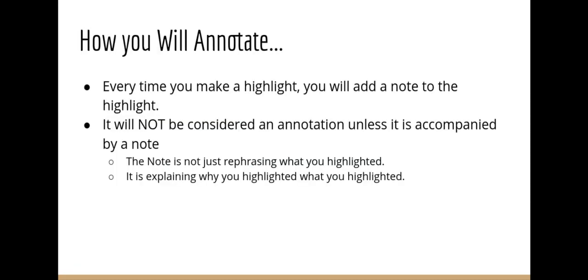How you will annotate: every time you make a highlight, you will add a note to the highlight. So this might be pen and paper — anytime you highlight or underline something, you will make a note out to the side in the margins. Or if you're on a computer, you would be in a Google Doc most likely. You will highlight using the highlight tool and then make a comment next to it using the comment tool. It will not be considered an annotation unless you put a note with it.